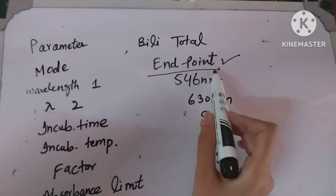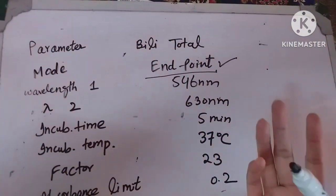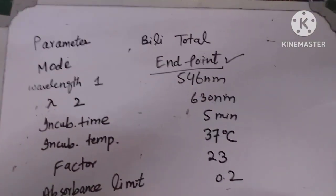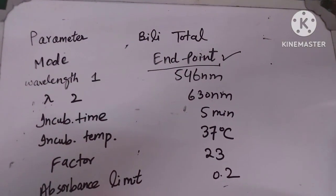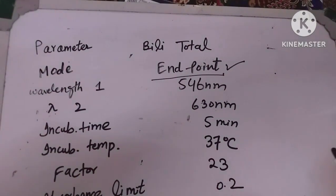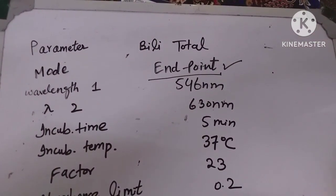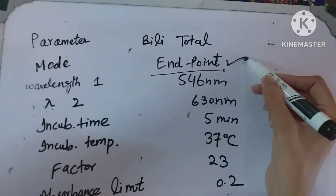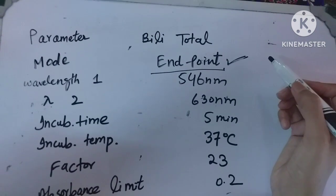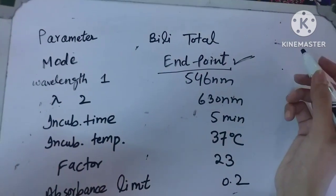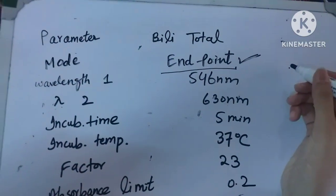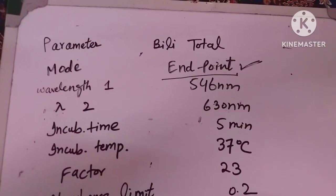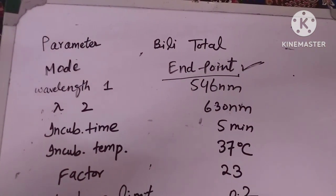The parameters of total bilirubin: the first parameter is mode — it is the endpoint method. Endpoint methods are those which develop a final color, as we saw the blank tube develop light yellow and the test tube develop green. The other type is the kinetic method — kinetic methods are those whose color does not change or does not develop a final color.